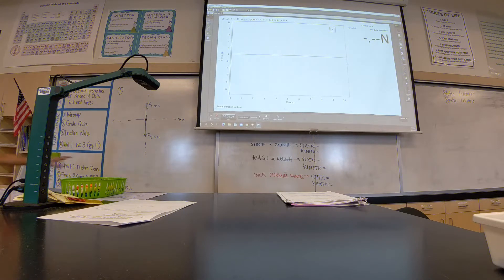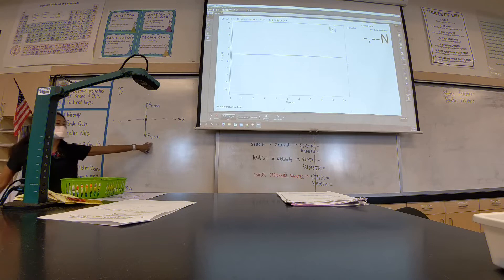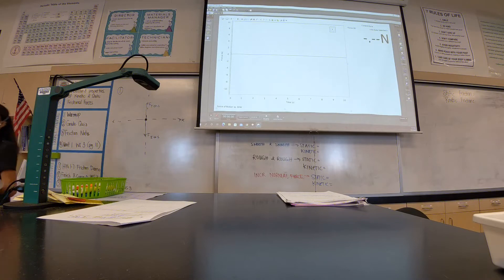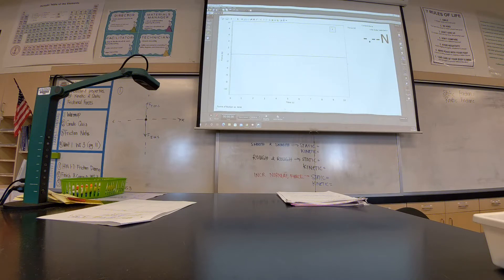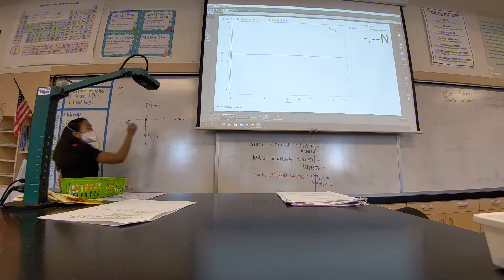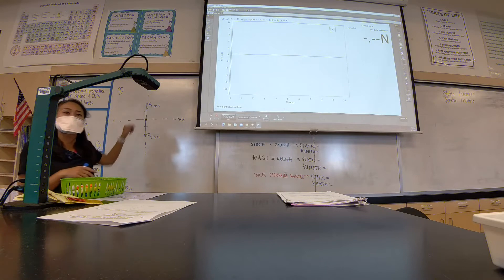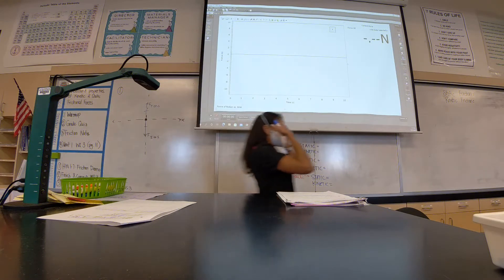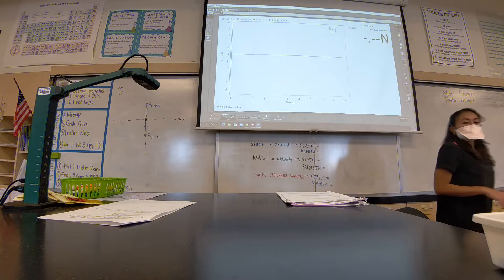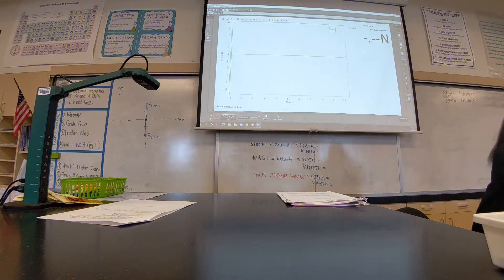You can call it a normal force or force of the table. You can call the other one the gravitational force or force of Earth. What else am I going to include in my free body diagram? Not necessarily forces — the congruency line. It's not moving on the y-axis, so include your congruency line.